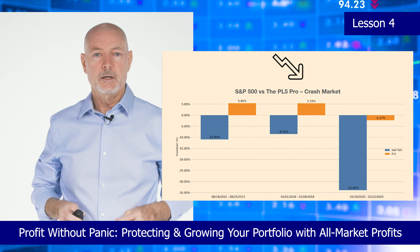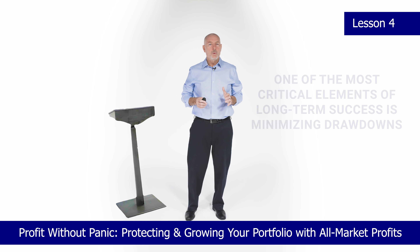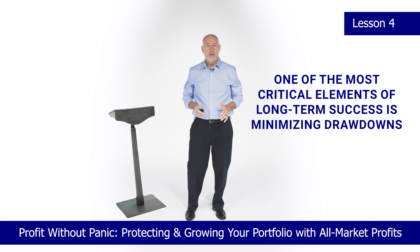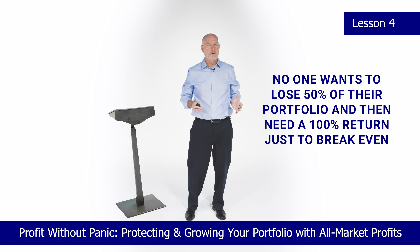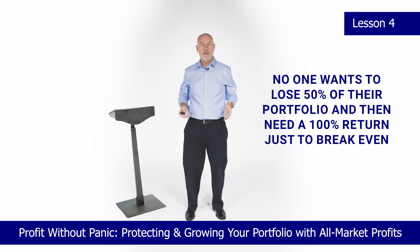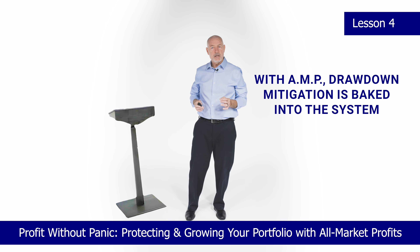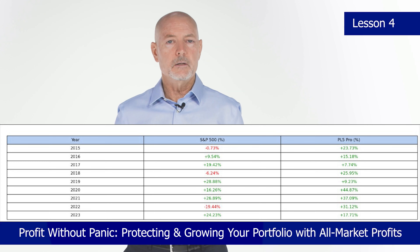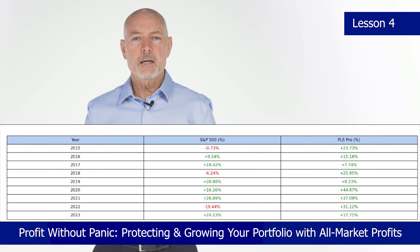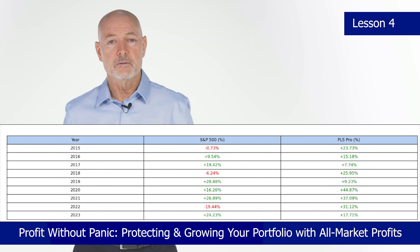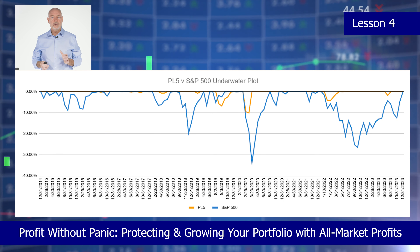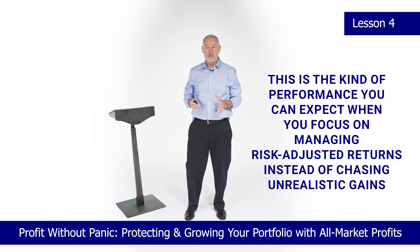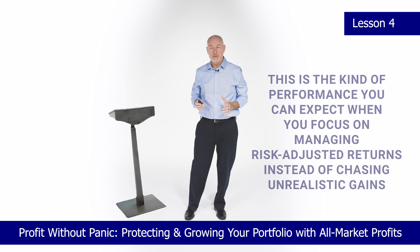One of the most critical elements of long-term success is minimizing drawdowns. No one wants to lose 50% of their portfolio and then need a 100% return just to break even. With the AMP, drawdown mitigation is baked into the system. Since 2015, while the S&P 500 experienced three years of negative returns, my AMP strategy has had zero losing years. The drawdowns have been shallow and the recovery times fast — the kind of performance you can expect when you focus on managing risk-adjusted returns instead of chasing unrealistic gains.